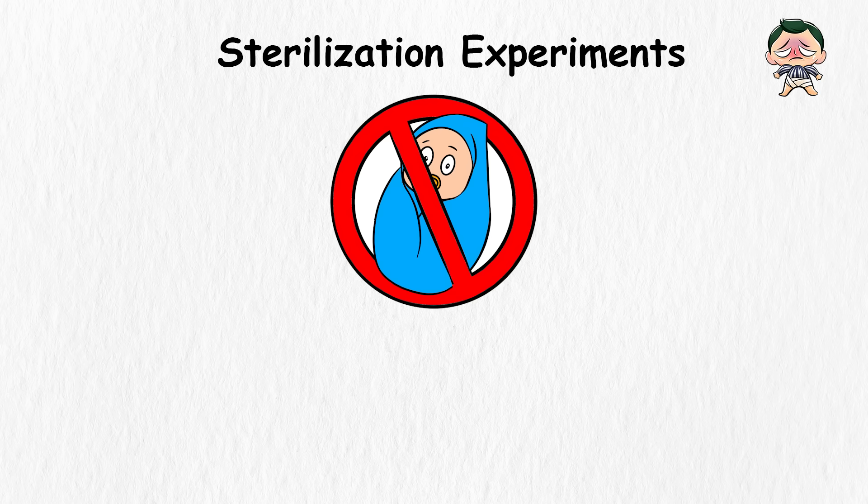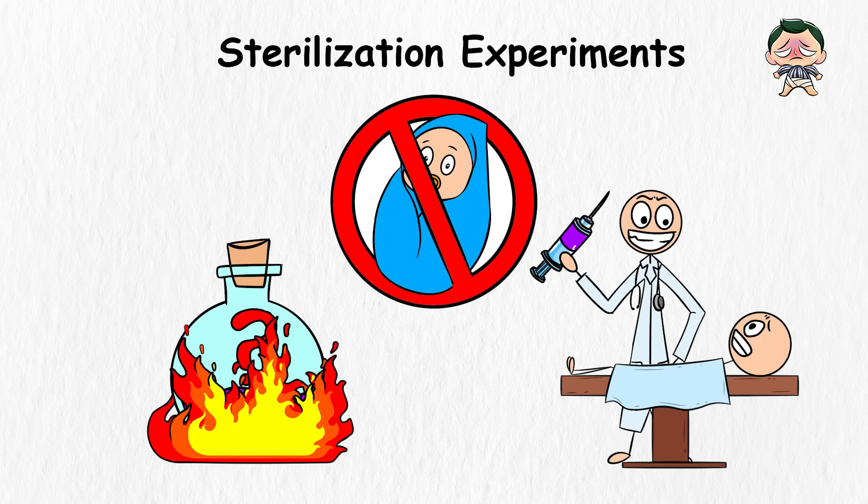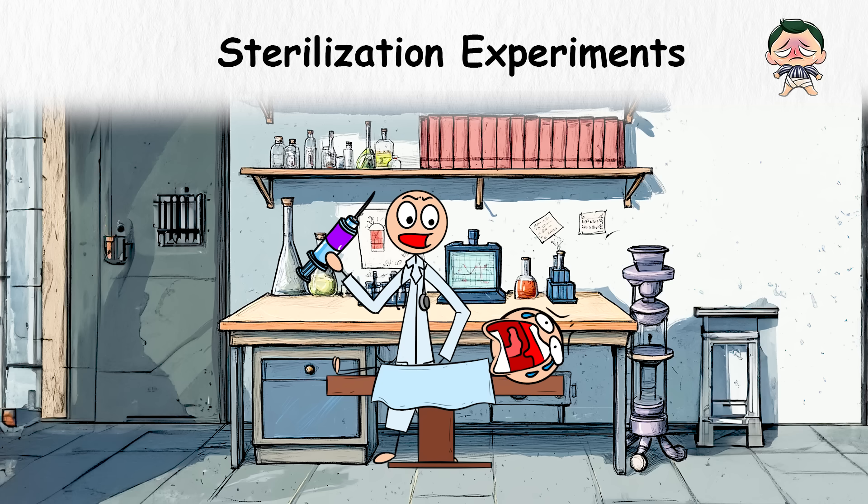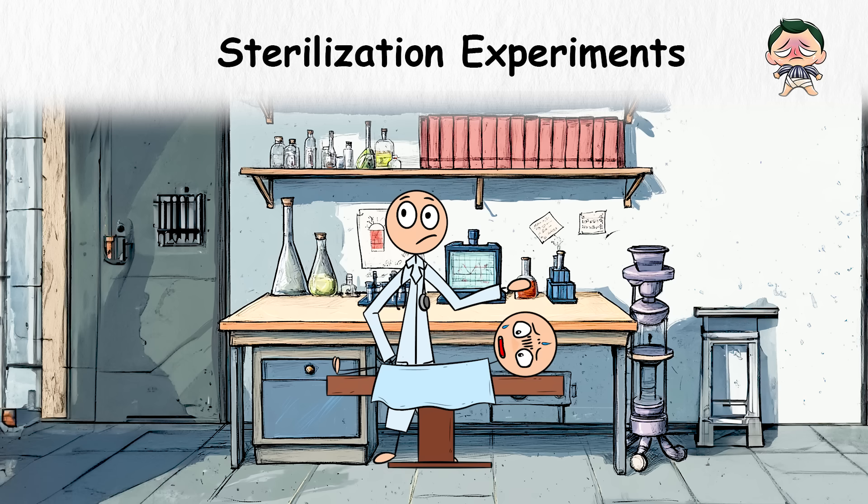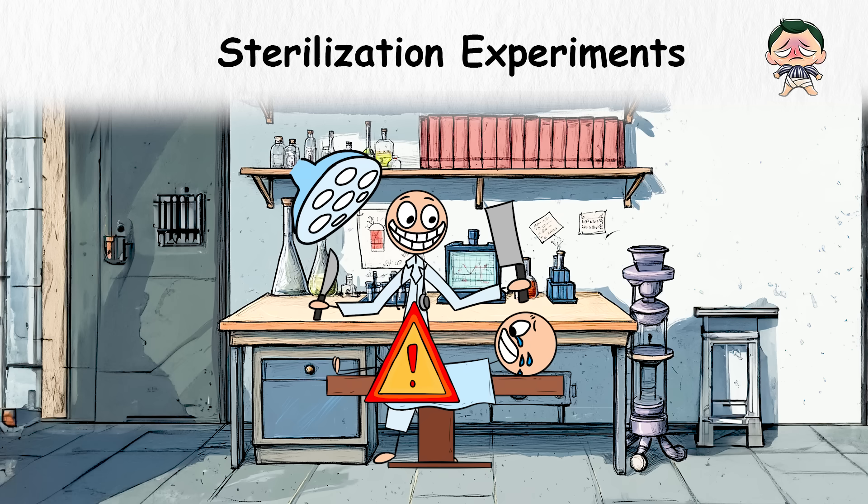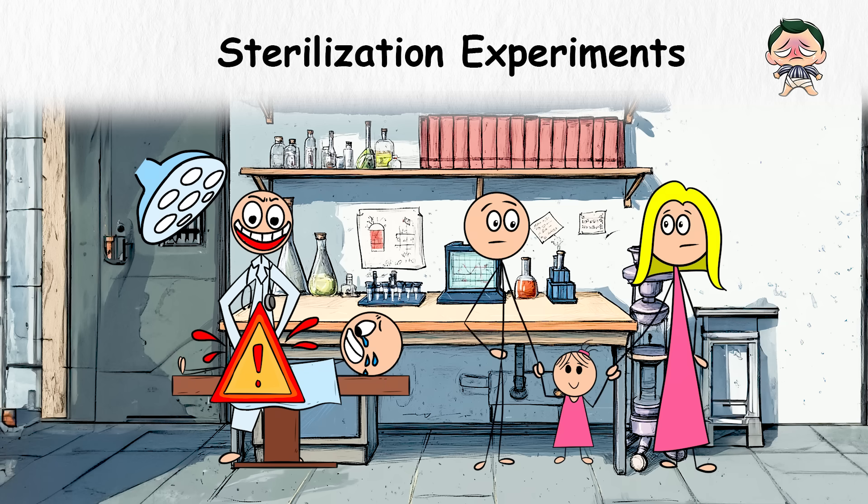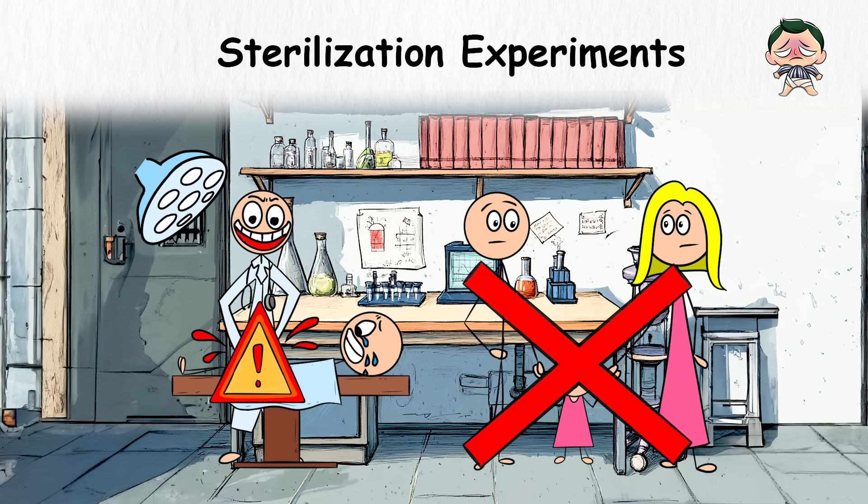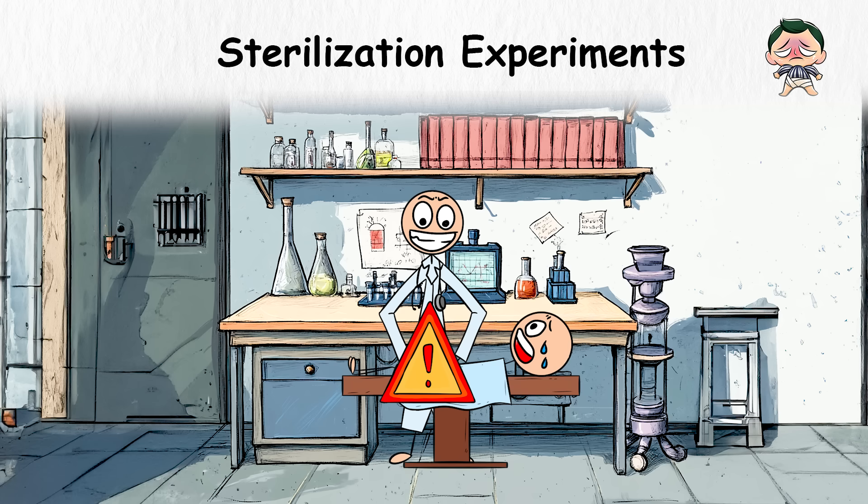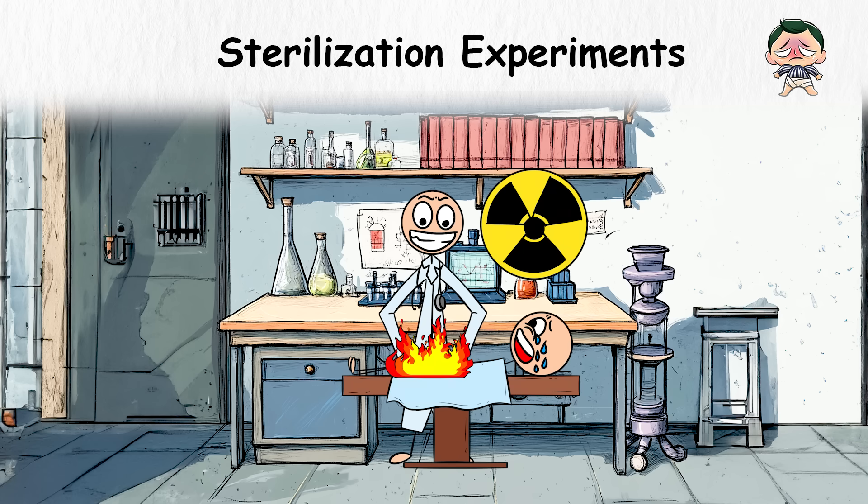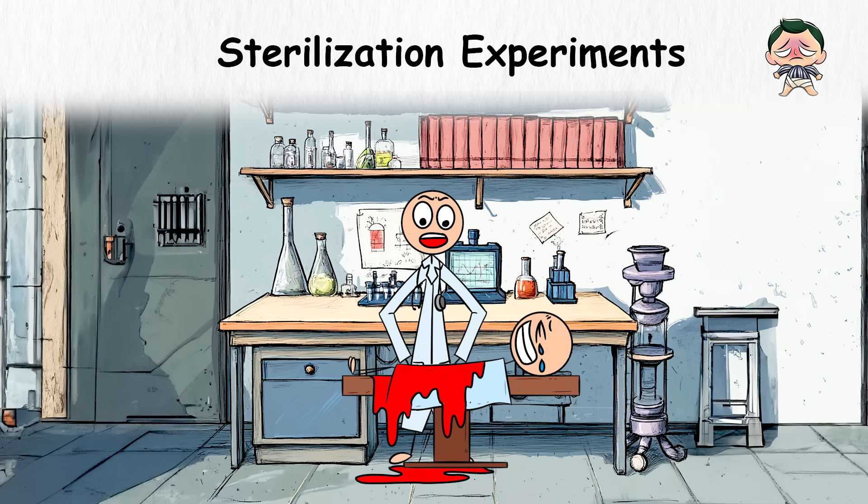But rather than simply stopping reproduction, these chemicals burned like fire as they entered your body, causing unimaginable pain and excruciating agony. If the injections weren't enough to satisfy the Nazi doctor's cruel intentions, you would be wheeled into surgery as you lay there, fully conscious, then they'd start brutally mutilating your private parts. Now, if they couldn't cut them off entirely, they'd damage them beyond use, making sure that any hope of a future family was permanently destroyed. Sometimes they would blast your reproductive organs with high doses of radiation, leaving you with severe burns, internal damage, and a body that had been irreversibly ravaged by these brutal procedures.